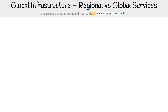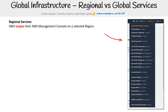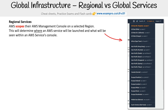So we just talked about AWS regions. Now let's talk about how that affects regional versus global services. Regional services are scoped based on what is set in the AWS management console on the selected region. You have this dropdown where you'll say, okay, I want to have resources in Canada or in Europe. This determines where an AWS service will be launched and what will be seen within the AWS services console. You generally don't explicitly set the region for a service at the time of creation.